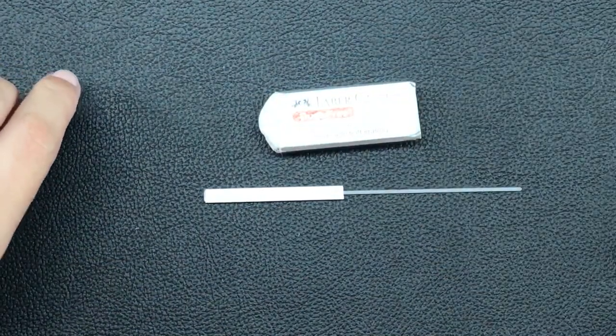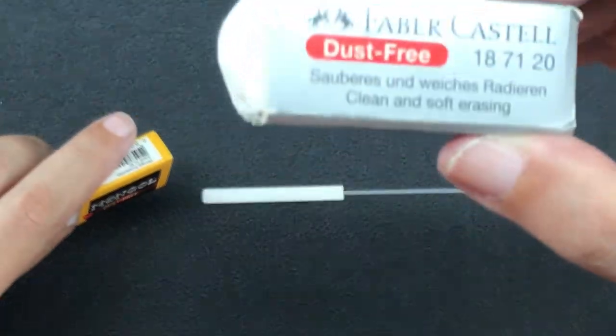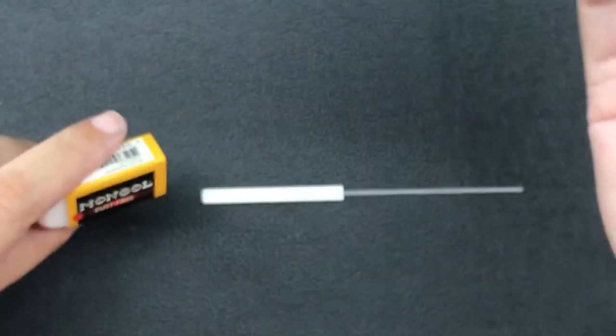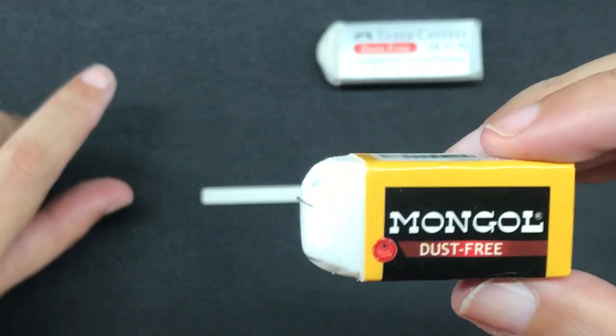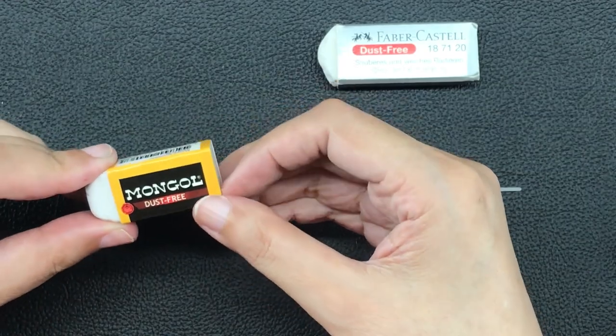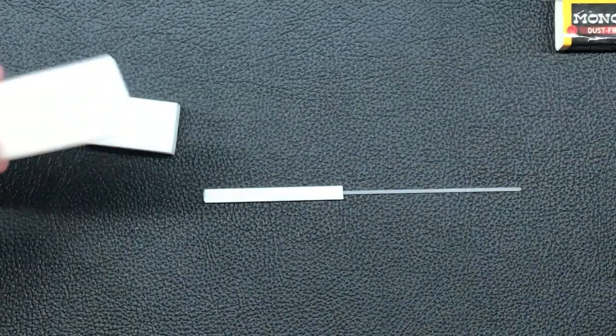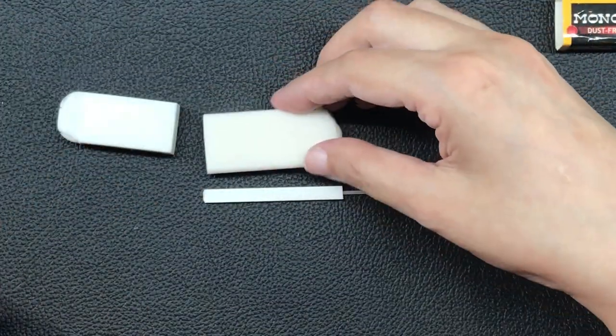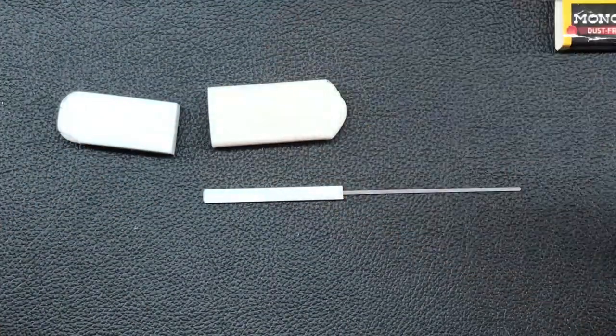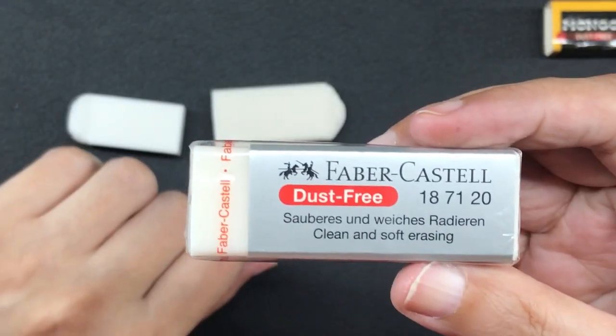But the problem with this eraser is that it does not erase cleanly. You can watch my review if you want, which is linked below as I mentioned. But I really liked the body of the eraser. I like that it's white and I really want the rectangular shape because I need the corners.